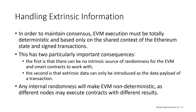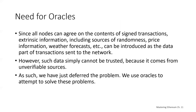Smart contracts have to reach the same result when performing mathematical computation in order for all nodes to be in consensus. The second consequence is that extrinsic data can only be introduced as a data payload of a transaction. You can be sending value, which is currency, or a data payload which is sent to a function to be executed in that contract. Any internal randomness in the EVM would make it non-deterministic, violating the protocol because nodes would reach different results.